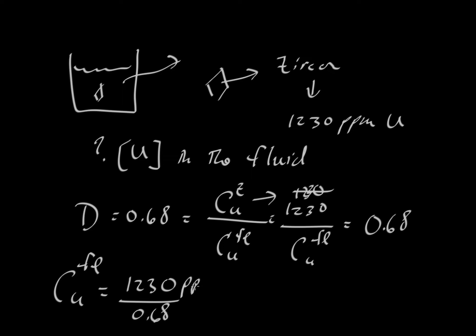So the concentration of uranium in the fluid (C subscript U) equals 1230 divided by 0.68. The units are ppm; there are no units on D because the ppm's cancel. So 1230 ppm divided by 0.68 gives us 1808.8 ppm.